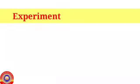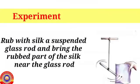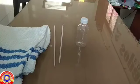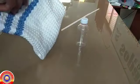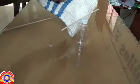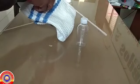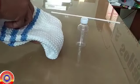Let's do another experiment. Rub a suspended glass rod with silk and bring the rubbed part of the silk near the glass rod. What do you observe? The glass rod and silk attract each other.